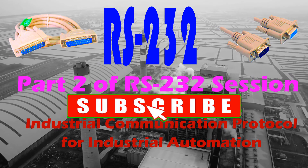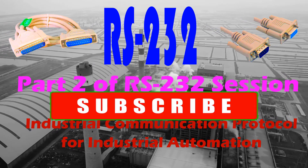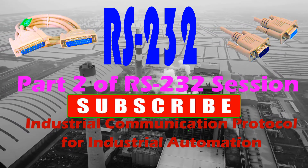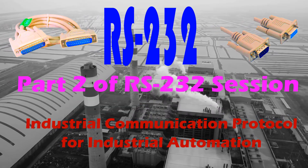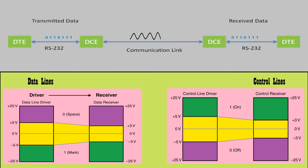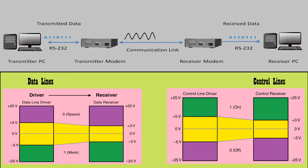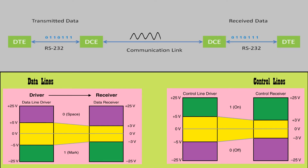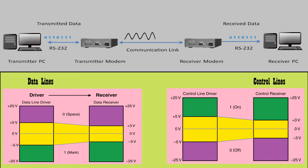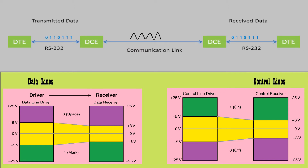If you have not subscribed to my channel, then do subscribe and press the bell icon so that you get notifications about future videos. In our previous lesson, the first part of the RS-232 lesson, we studied the electrical characteristics of RS-232 — what voltage range represents logic 0 and 1 for data lines and control lines. Now we will proceed to the mechanical characteristics of RS-232.